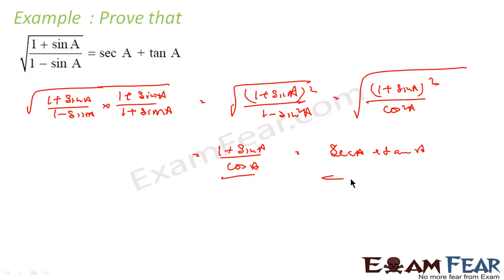This was in the root form and we wanted it in the normal form, so we had to rationalize. We divided and multiplied by (1 + sinA) and we got the answer.